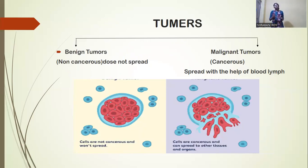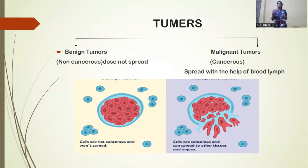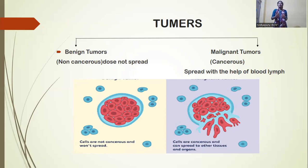Before we learn about cancer further, we first need to know about tumors. When a normal cell starts uncontrolled division in our body, tumors occur. There are two types of tumors: benign tumors and malignant tumors. In the case of benign tumors, this type of tumor is non-cancerous.